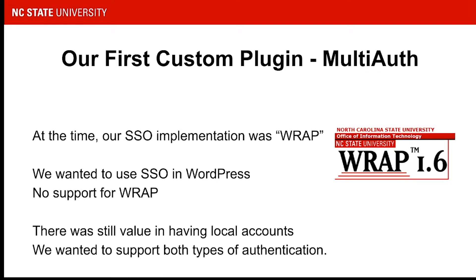Back in 2013, we were using a single sign-on implementation called RAP. RAP was a plug-in to Apache 2.2, not compatible with 2.4 — which was a fun upgrade. It was pretty much NC State and two other universities using this authentication system. So when we made the move to WordPress, we wanted to use our single sign-on solution, but obviously there weren't any existing integrations. So we decided to write our first custom plug-in, MultiAuth, which allowed us to do that.